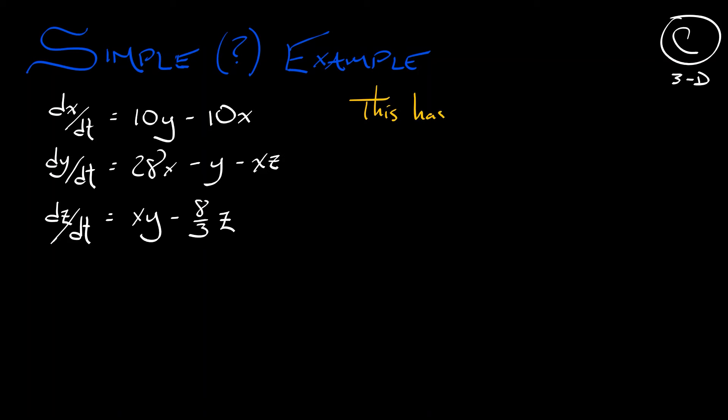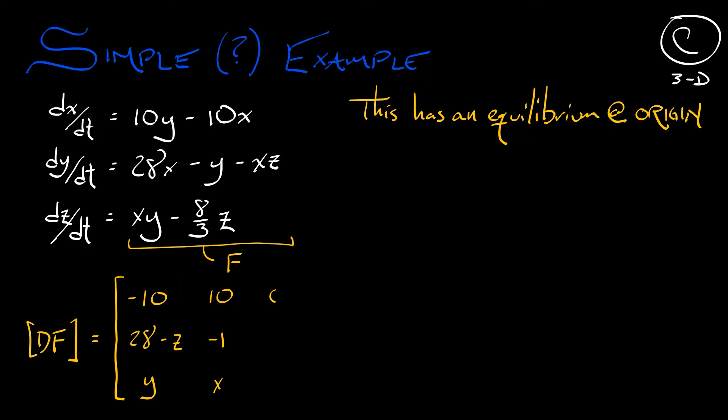Now, notice that this has an equilibrium at the origin. What can we say about it? Well, considering the right-hand side as being a function f, a function with three inputs x, y, and z, and three outputs, the derivative of x, derivative of y, derivative of z. Then, if I compute the derivative of this function f, what do I get? I get a three-by-three matrix, where the first column is the partials with respect to x. That gives us negative 10, 28 minus z, and y. The second column is the partials with respect to y. That gives me 10, negative 1, x. The third column is the partials in z. That's 0, and negative x and negative 8 thirds.